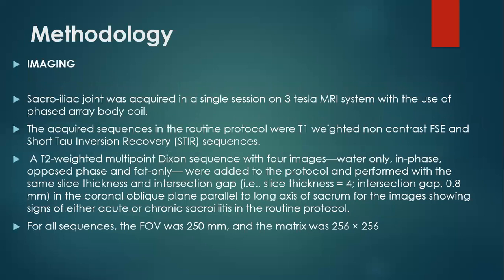The methodology was that the sacroiliac joint was acquired in a single session on a three Tesla GE Discovery MRI system used in our hospital. The routine protocol sequences were taken — T1 and STIR sequences — and looked at for any imaging features of sacroiliitis, be it acute or chronic. When sacroiliitis was found in a patient, the Dixon sequence protocol was added, obtaining four images: named as LAVA Flex in our machine — water only, in-phase, opposed-phase, and fat only.